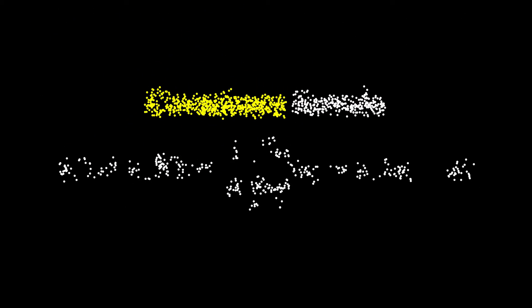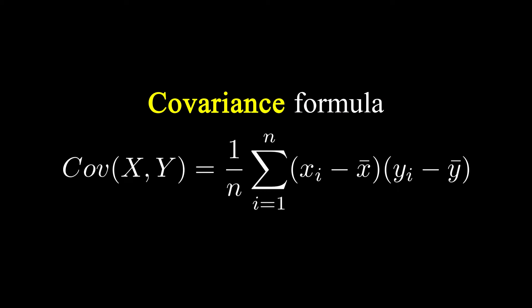The covariance formula doesn't really differ from the one of variance. Only that instead of squaring each error term for each point, we multiply the error term of A with the error term of B. And voila, you just constructed covariance, a statistical value, telling you how two distributions affect one another.